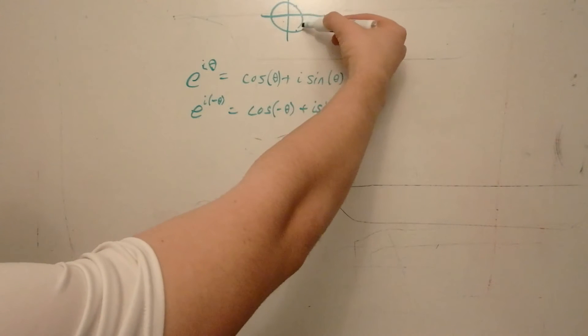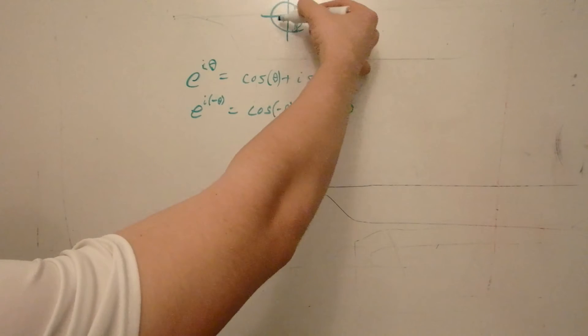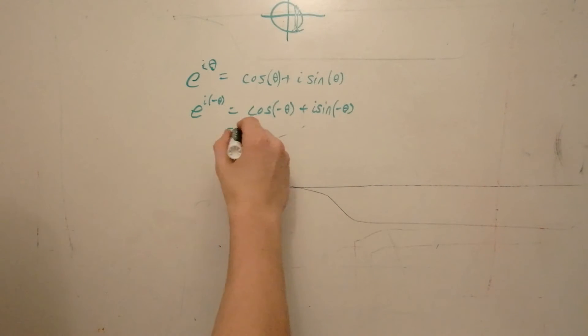Now we take a negative theta. We're going to just change the sine to a negative value, but the cosine should stay the same, because it's an equal distance from minus one. So this is equal to cosine of theta minus i sine of theta.